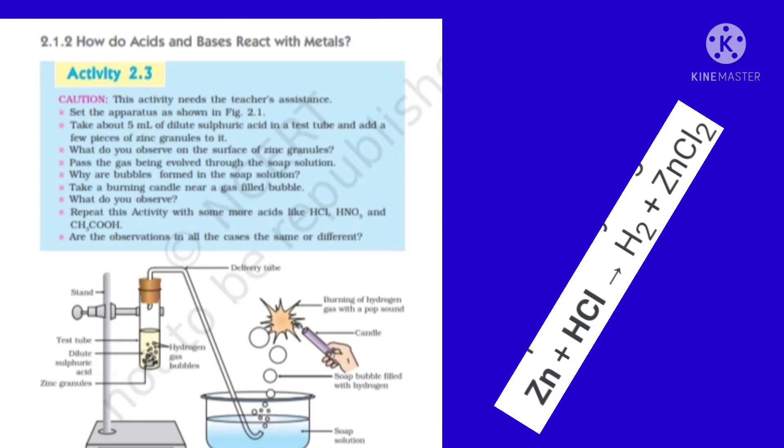We can observe that bubbles evolve. Bubbles of hydrogen gas rise from the trough. How will you prove it is hydrogen gas? Because it is a colorless gas, you are going to take a burning splinter to the mouth of the trough, near the bubbles. It burns with a pop sound. It is confirmed now. Only hydrogen burns with a pop sound.